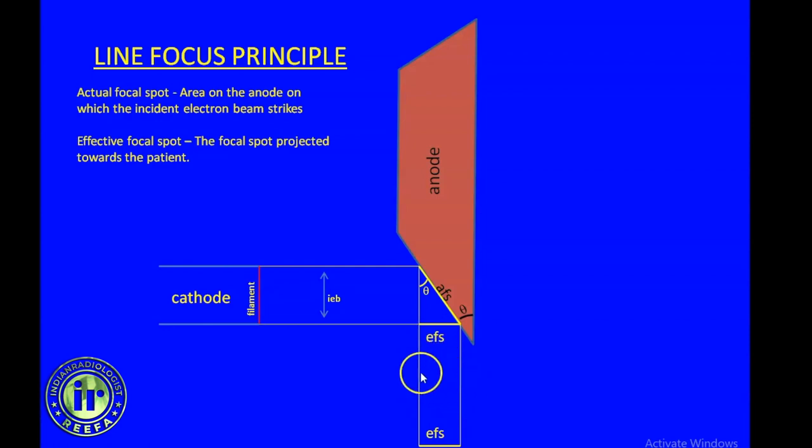How do we achieve thinner and thicker beams? By manipulating the width of the electron beam. The width depends on three factors: number one, the size of the filament - the shorter the filament, the narrower the beam; the longer the filament, the wider the beam. Second, the construction of the focusing cup in which the filament is placed. And third, the position of the filament within the cup.